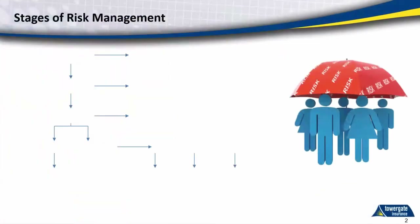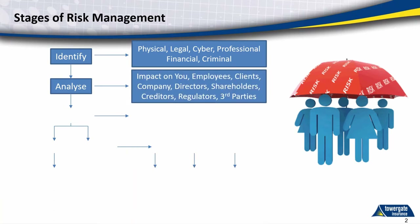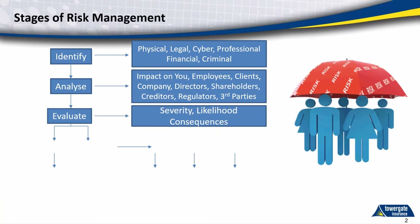Not wanting to teach anyone to suck eggs, we're just going to go through the very basics of risk management and talk you through the process and the flow. When we're looking at risks, we first have to identify what sort of risk it is — physical, legal, and so on. Once we've identified the risk, we then analyse it to see what its impact is going to be on various people — the impact on you, employees, anyone really. After we've analysed it, we then evaluate the risk: the severity, the likelihood, the consequences. These are all very important stages of risk management.